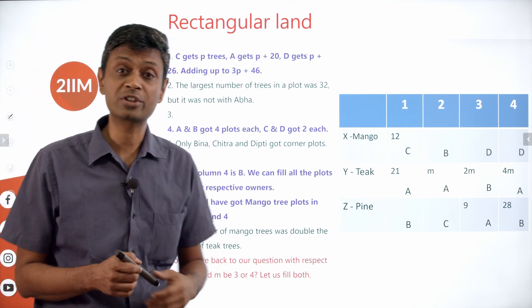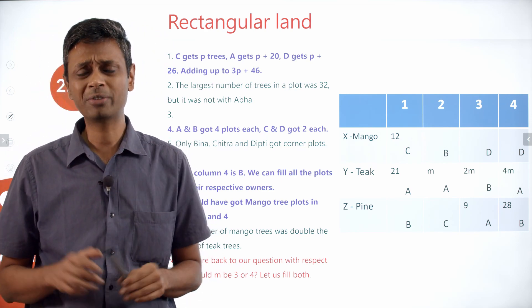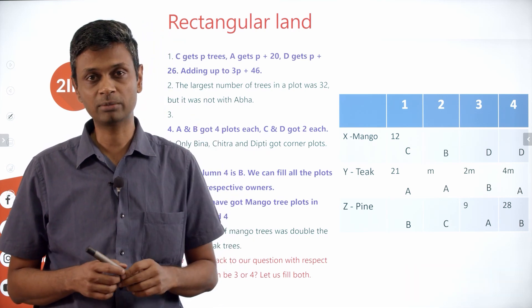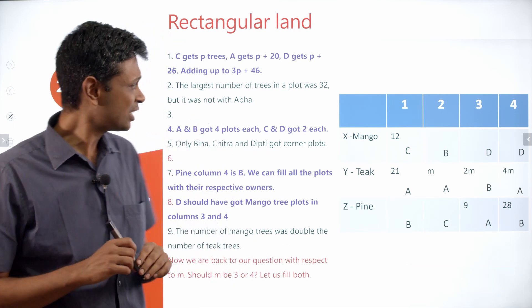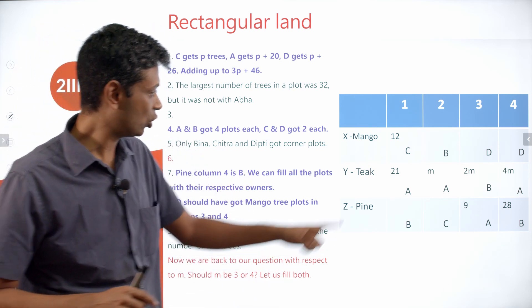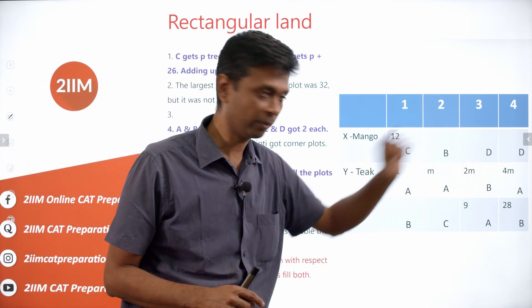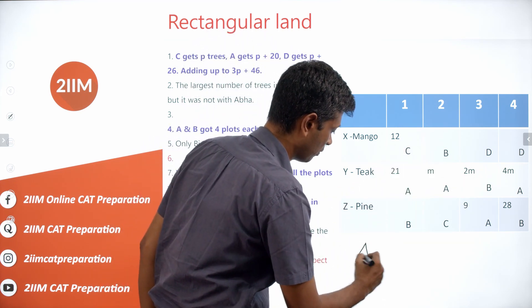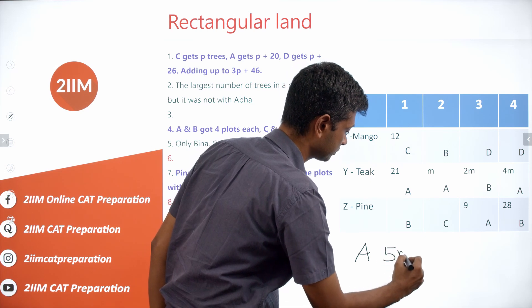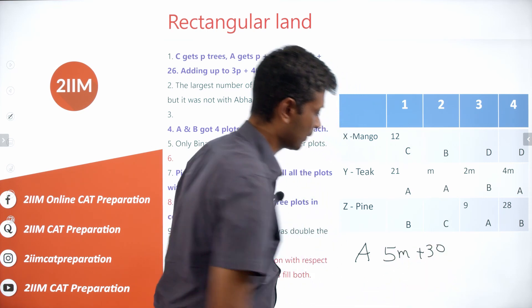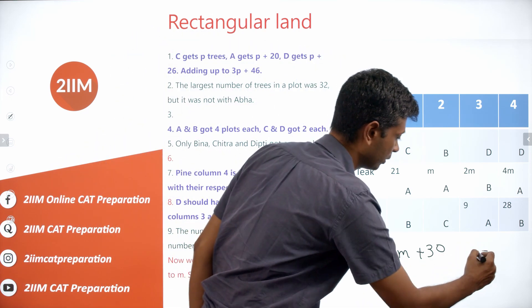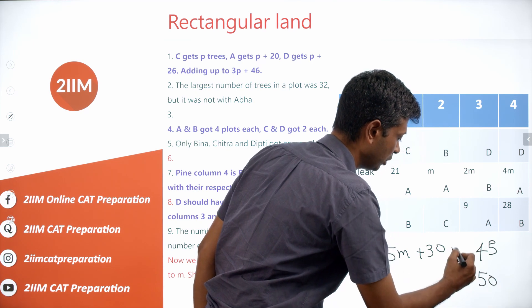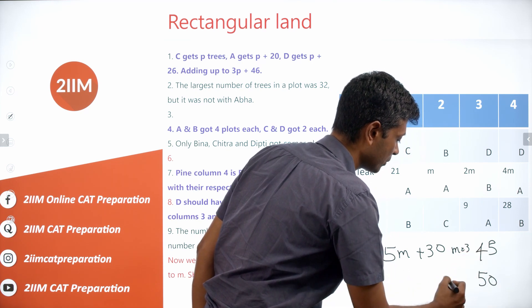Now we revisit whether M is 3 or 4. Ava's cells are completely filled: she has plots worth 21, M, 9, and 4M. Adding those up gives 5M plus 30. If M equals 3, Ava totals 45. If M equals 4, Ava totals 50.